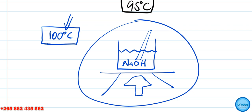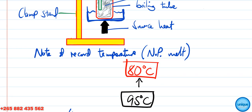If the water is impure, the boiling point will be above 100 degrees Celsius. Impurities in substances generally increase the boiling point and melting point — that is the effect of impurities on substances.